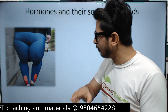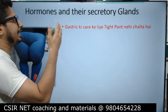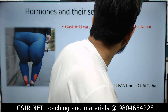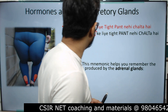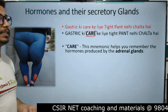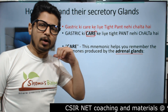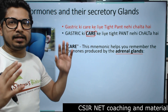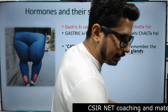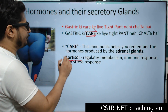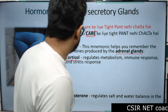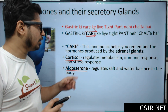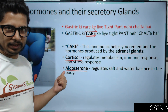Now the second part — we focus on 'care,' the keyword for adrenal gland hormones. Earlier we talked about hormones secreted by the stomach, but now we focus on hormones secreted by the adrenal glands. C for cortisol — regulates metabolism, immune response, and stress response of the body. A for aldosterone — regulates salt and water balance in the body.